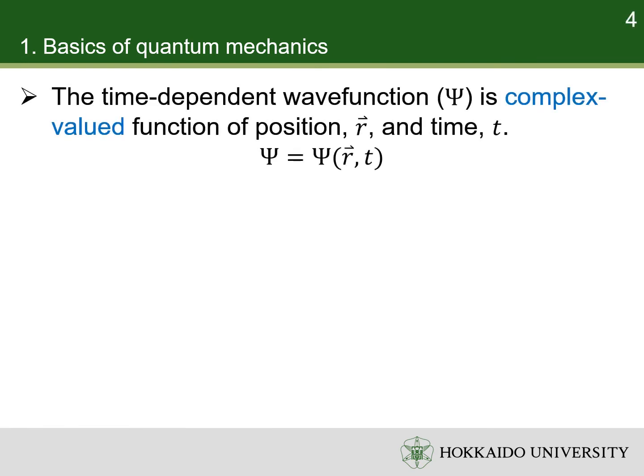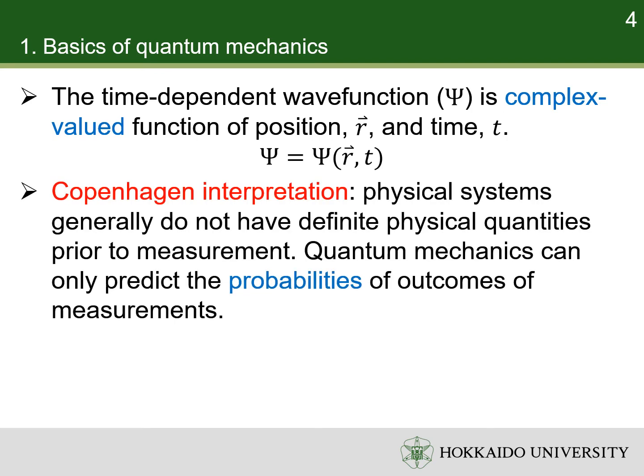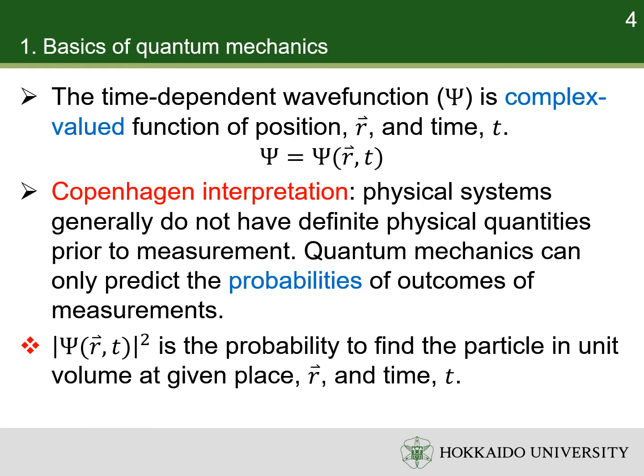The time-dependent wave function is a complex value function of position and time. The physical meaning of the wave function is given by the Copenhagen interpretation. Physical systems generally do not have definite physical quantities prior to measurement. Quantum mechanics can only predict the probabilities of outcomes in measurements. For instance, the square of the modulus of the wave function is the probability to find the particle in unit volume at a given place and time.